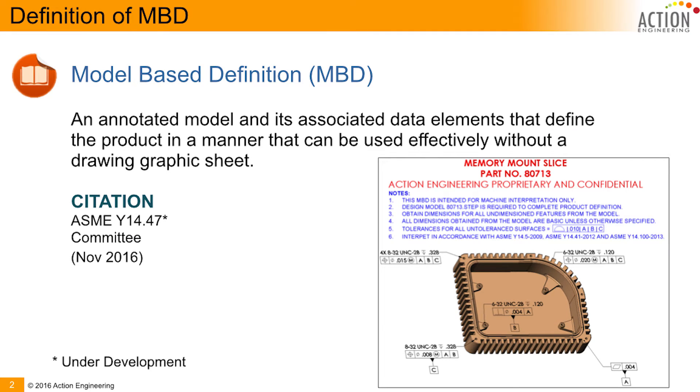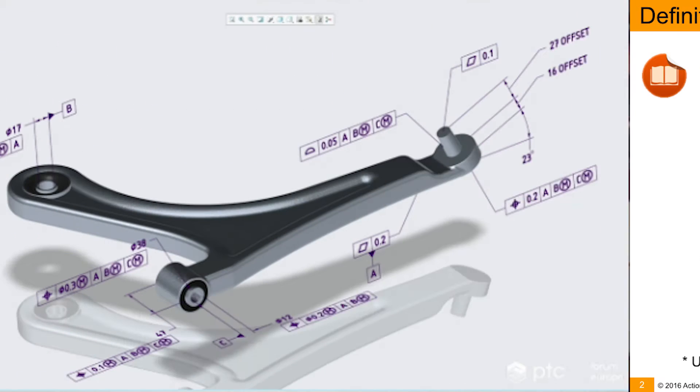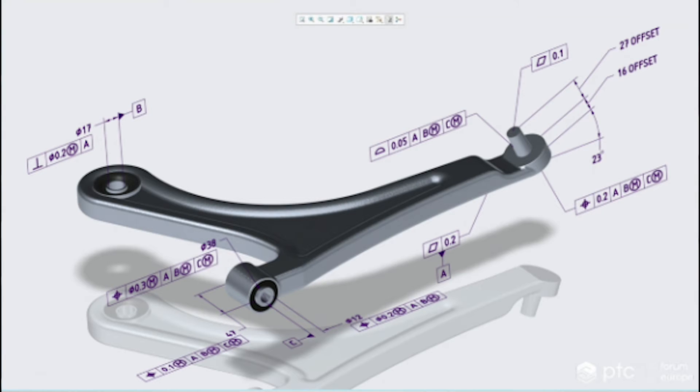Model-based definition is basically that definition that replaces or takes the form of a model rather than a drawing, although you can have a drawing be a downstream derivative of that information. Model-based definition is an annotated model and its associated data elements that define the product that can be used effectively without a drawing. We're trying to grab all the good information that exists on the drawing to communicate the design intent, manufacturing intent, and inspection intent, and include that on the source authority model so that downstream applications can take advantage of the geometry and all of the geometric dimensioning and tolerancing digitally associated to those particular features.